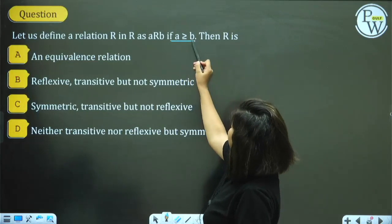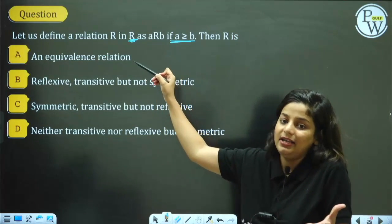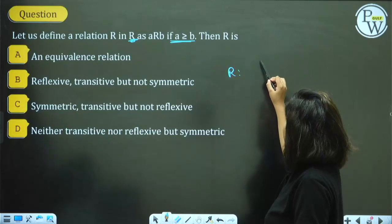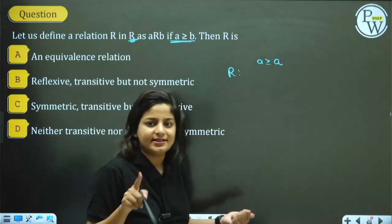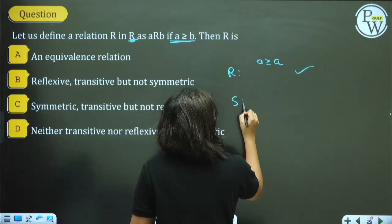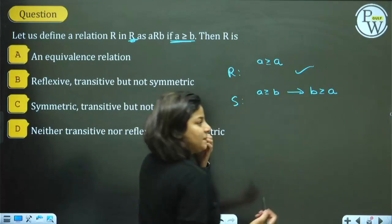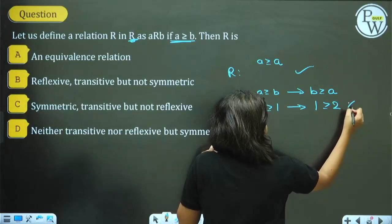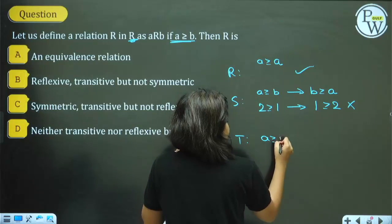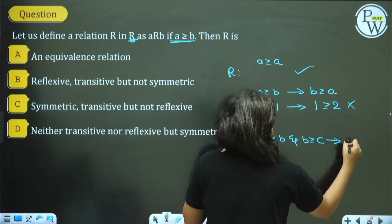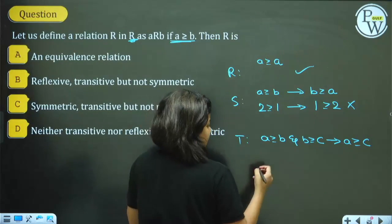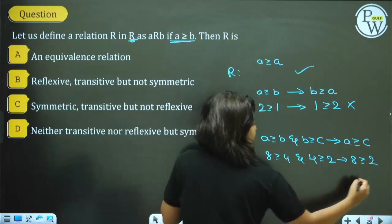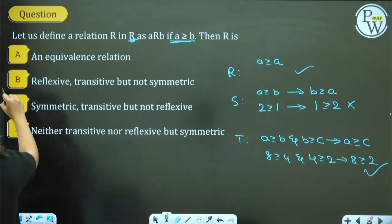Next question: R is defined on real numbers as a ≥ b. Is it reflexive? Is a ≥ a? Yes, every number is equal to itself — reflexive. Is it symmetric? Does a ≥ b imply b ≥ a? Counter-example: 2 ≥ 1 but 1 is not ≥ 2. Not symmetric. Is it transitive? If a ≥ b and b ≥ c, does a ≥ c? Example: 8 ≥ 4 and 4 ≥ 2 implies 8 ≥ 2 — yes. It is transitive. Again reflexive and transitive but not symmetric.